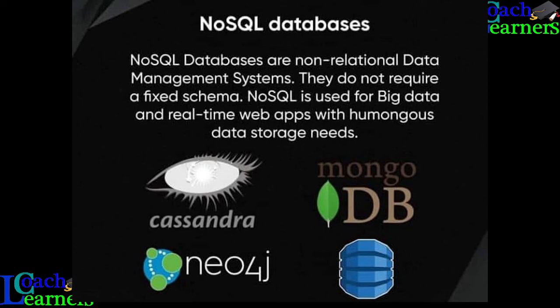The final type is NoSQL databases. NoSQL simply means there is no relational data — these databases do not require a fixed schema. NoSQL is used for big data analytics and real-time web applications with enormous data storage needs. Examples of NoSQL databases include MongoDB, Neo4j, and Cassandra.